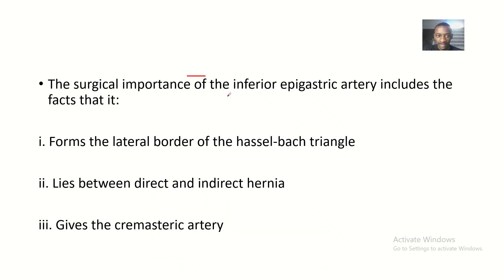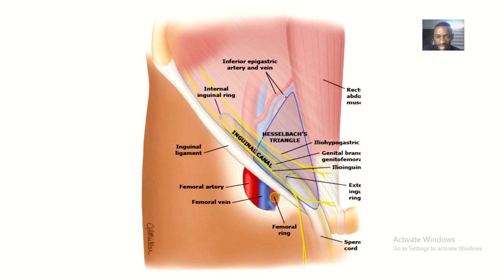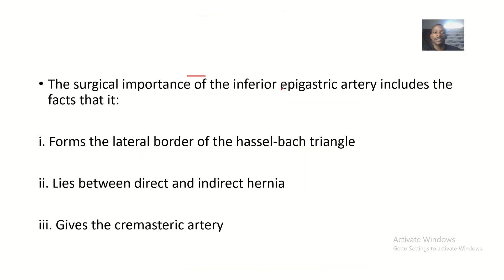First, you can see Hesselbach's triangle there, and you can see the inferior epigastric artery and veins forming a border of Hesselbach's triangle. So, the first surgical importance of the inferior epigastric artery is that it forms the lateral border of Hesselbach's triangle.